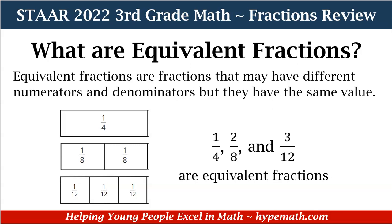We have 1/4, we have 2/8, and also 3/12. Although all of these fractions have different numerators and denominators, they are all the same value. Equivalent fractions may have different numerators and denominators, but they have the same value. We see the 1/4, and even though 2/8 is split up into 2 parts with 1/8s, it's still the same value as 1/4. And the same thing for our 3/12 — it's divided into 3 parts, however it is the same amount as 1/4.